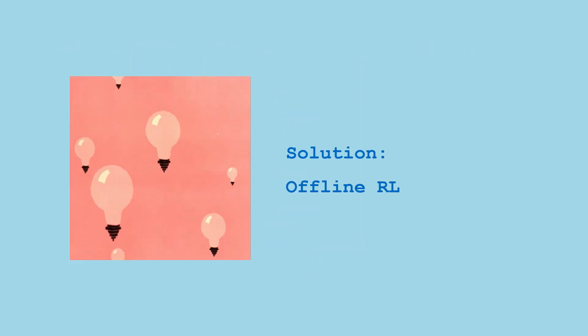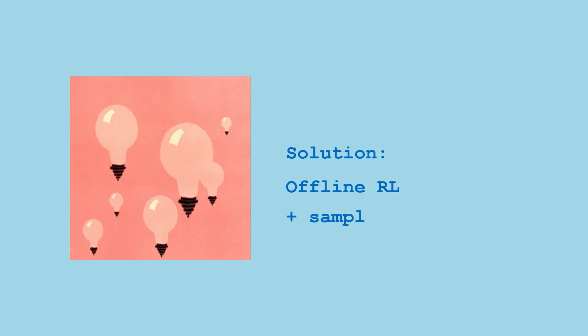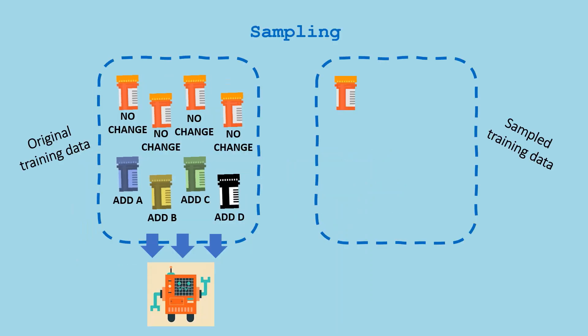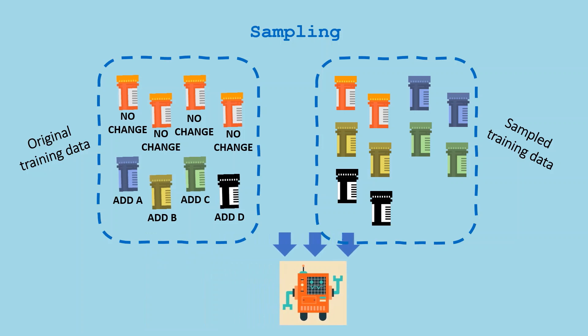Our solution is to apply offline RL but trained on re-sampled data. We under-sample data on overrepresented treatments and over-sample data on underrepresented treatments. This reduces imbalance in the training data.